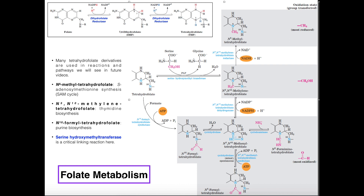First we're going to see how we actually get tetrahydrofolate, and then we're going to see all the various things that we can do with it. Tetrahydrofolate derivatives are going to be used extensively in all sorts of biosynthetic reactions — we're going to see this in amino acid biosynthesis and in nucleic acid biosynthesis — and they're used to deliver one carbon at a time.